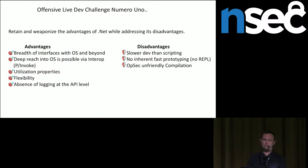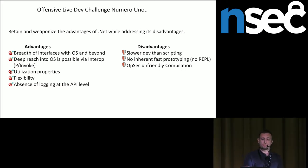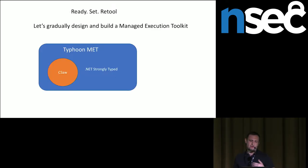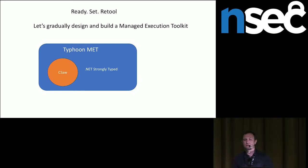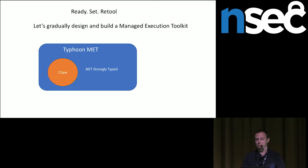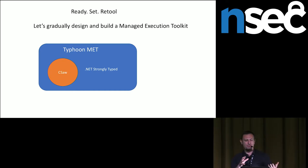We know we can target the advantages, which are all playing towards our favor, but our disadvantages also have to be recognized. So let's address them. Let's start to gradually design and build this prototype — the Managed Execution Toolkit. Behind those big words, what that really means is using .NET to be able to execute your code and execute data that you bring in from the outside or write directly on the box. We begin with a module of Typhoon, which is the name for Managed Execution Kit. The proof of concept here is Seesaw — focusing on C# implementation.